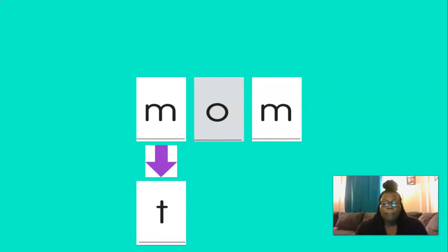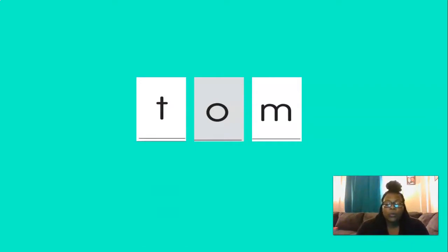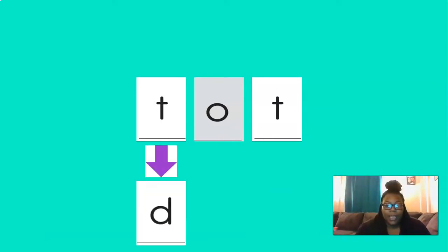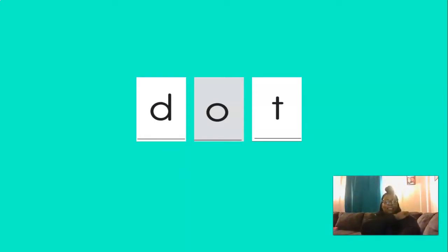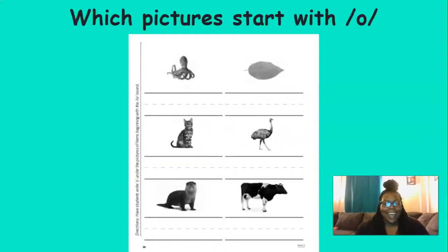So, if we change the mm to tt, our new word would be... That's right. Tom. Tt, ah, mm, Tom. Good. Now, if we change the mm to a tt, our new word would be... That's right. Tot, tot, tt, ah, tt, tot. If we change the tt to a d, our new word would be... You got it. Dot. D, ah, tt, dot. Very good. Excellent job chaining.